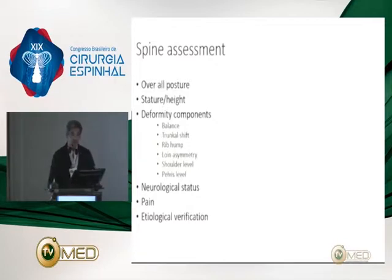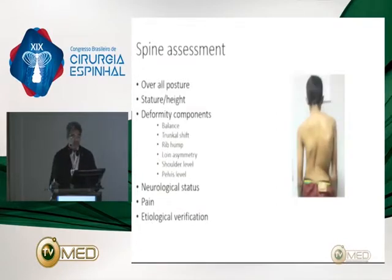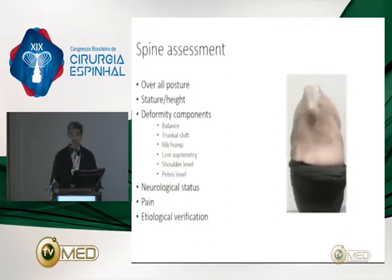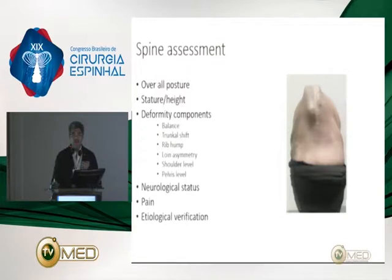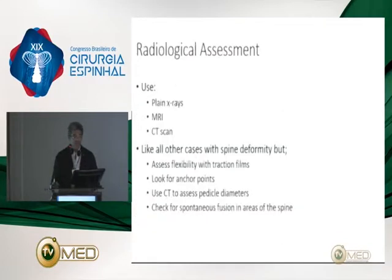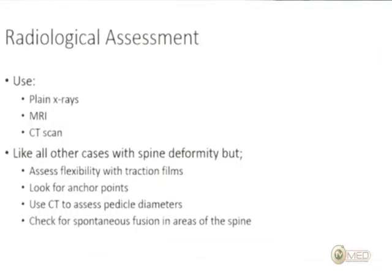You look at the deformity components: the balance, trunk shift, rib hump, waist asymmetry, shoulder and pelvis levels, and scars from previous surgeries. You also assess neurological status — unfortunately some patients have neurological problems that must be addressed. Pain is expected in many of these patients, with particular attention to thoracopelvic impingement where the rib cage hits against the iliac crest. Etiology also helps plan surgery.